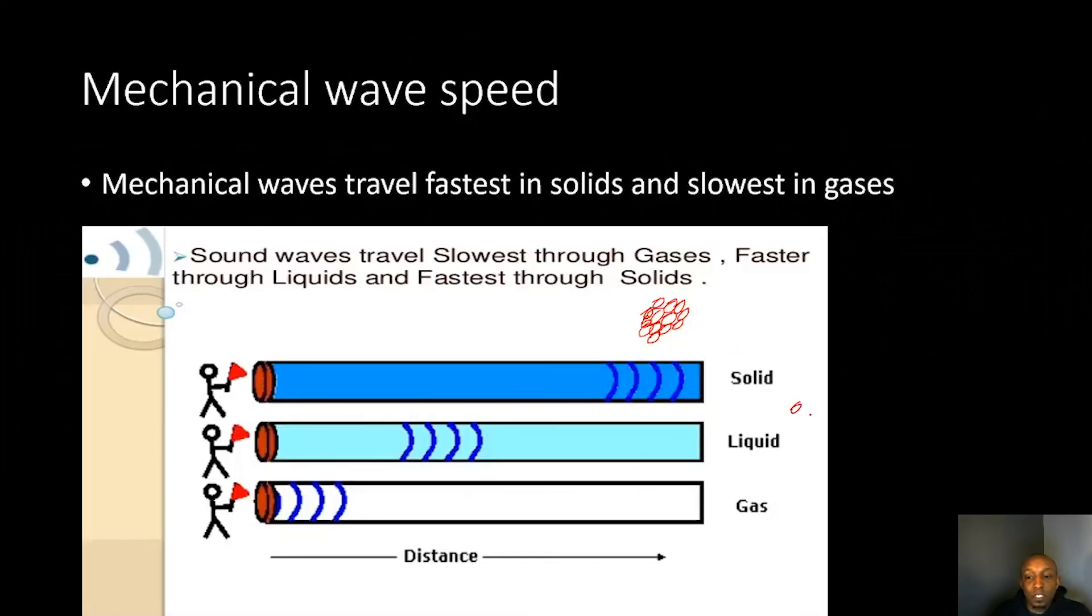But when we get into liquids, the particles are spread further apart. So it slows down that wave since those particles are further apart. And if we look at gases, they're the most spread out or the most farther apart. That's why mechanical waves travel the fastest in solids because the particles are so close together, and they travel the slowest in gases because the particles have more distance between them.